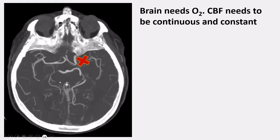The absolute basis of understanding perfusion and vascular pathophysiology in stroke is that the brain needs oxygen — a lot of it, and immediately — because the brain does not have a lot of energy stored up. The moment the brain doesn't receive oxygen anymore, cells start to suffer. So the cerebral blood flow needs to be continuous and constant for the brain to function properly.